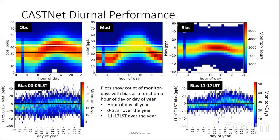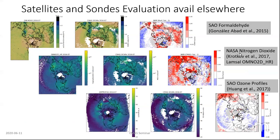We also looked at the satellites. We compared the satellites to the formaldehyde product, and compared the GEOS-Chem high-resolution product to the model. We also compared the Smithsonian Atmospheric Observatory ozone profiles to the model. All of these are available in the appendix to the ozone policy assessment, which is currently available in draft form and will be coming out in final form soon.